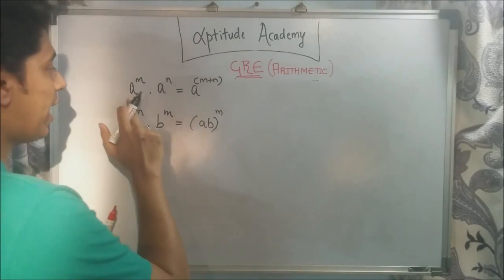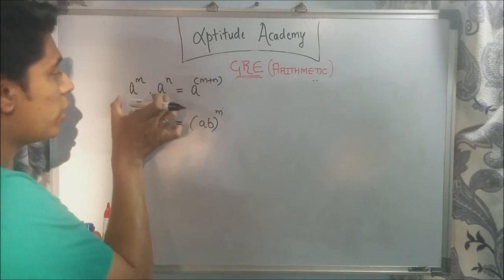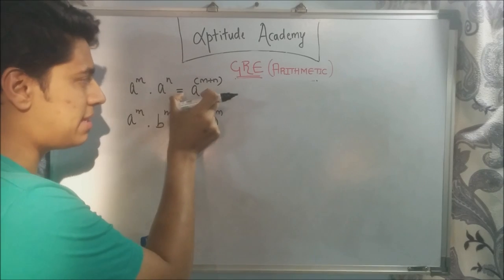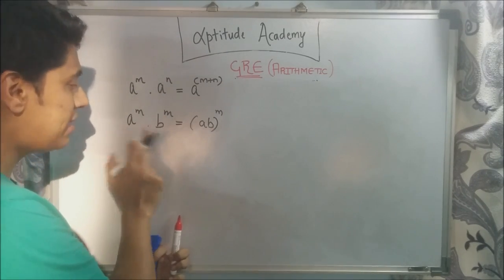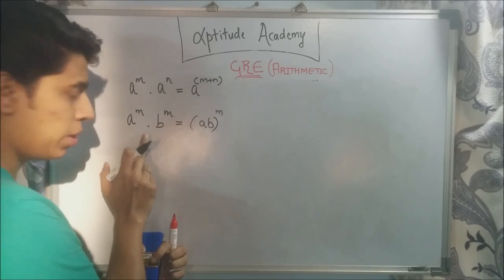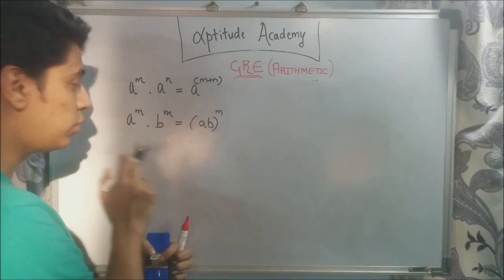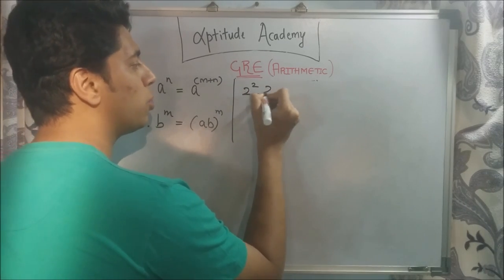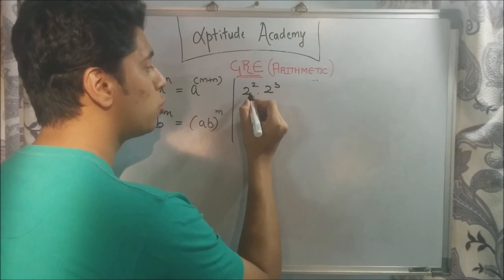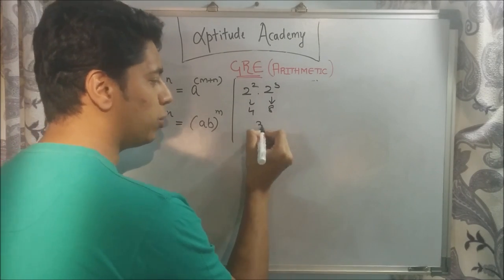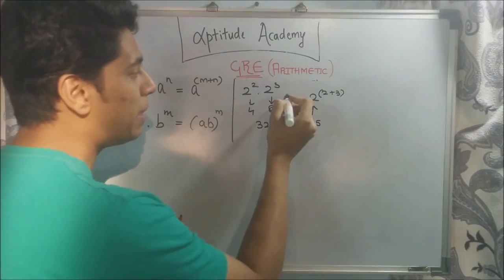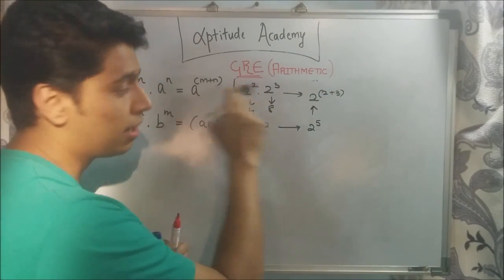Before we end this lecture, a couple of properties to help you simplify these numbers faster. First: A raised to m into A raised to n equals A raised to m plus n. When your bases are the same but exponents are different, retain the base and add the exponents. To prove this — 2 squared into 2 cubed: 4 times 8 is 32, which is 2 raised to 5. And 2 raised to 5 is 2 raised to 2 plus 3. So you could have gotten this directly in one step: retain the base, add the exponents.